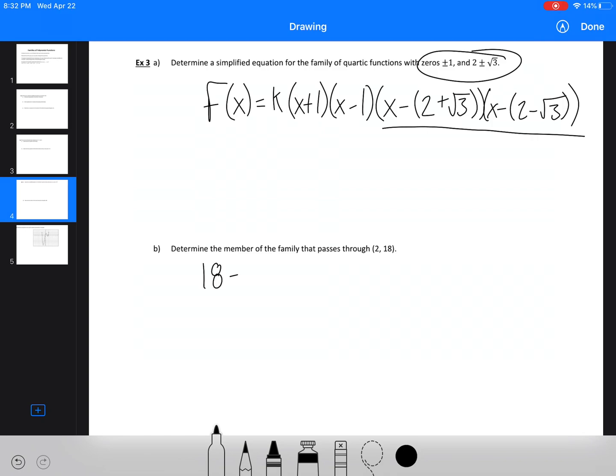we'll get 18 equals k, and then we've got (2 plus 1), (2 minus 1), (2 minus 2 minus root 3), because that negative goes to the positive 3, and then we've got (2 minus 2 plus root 3). So then we've got 18 equals k times 3 times 1 times negative root 3 times positive root 3.